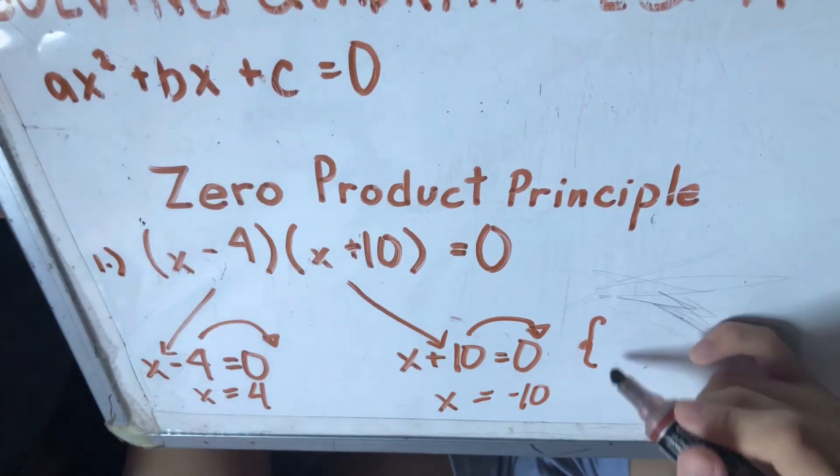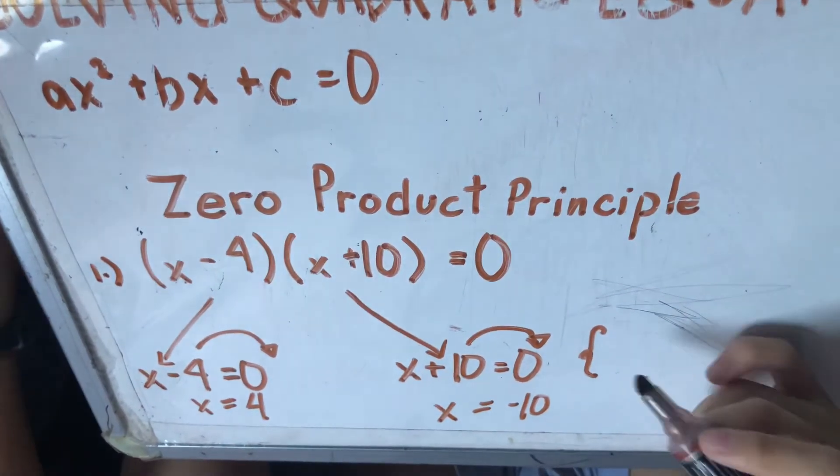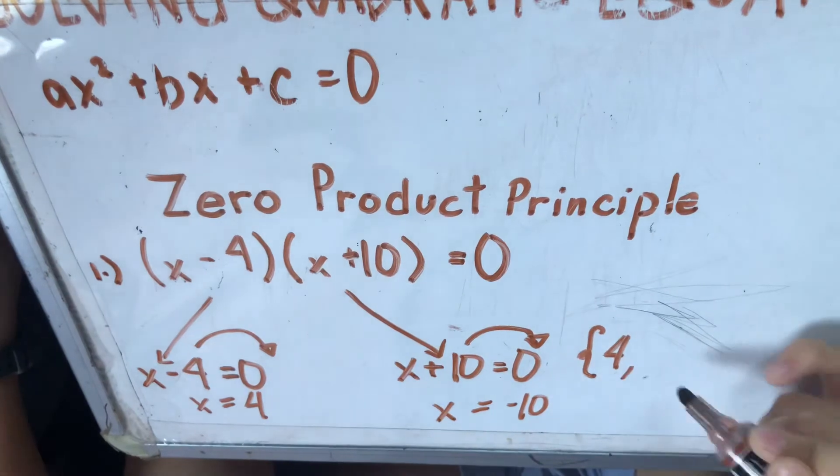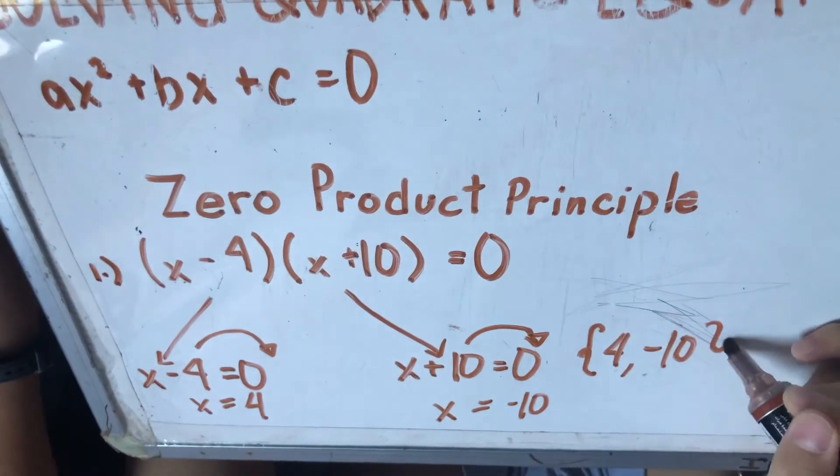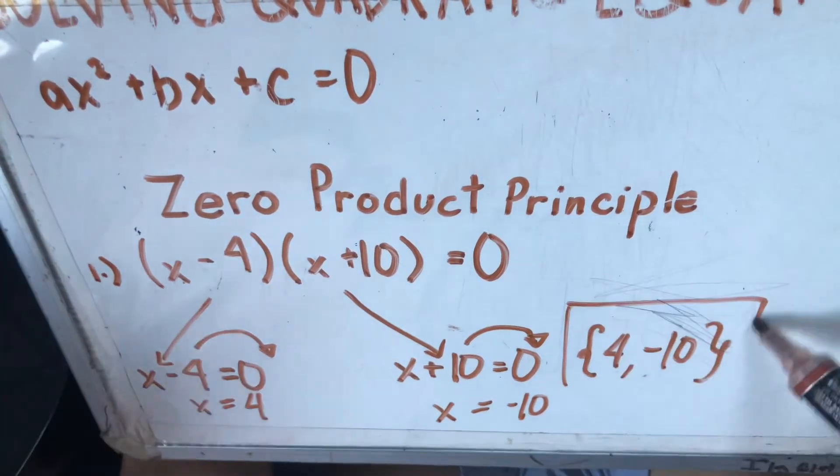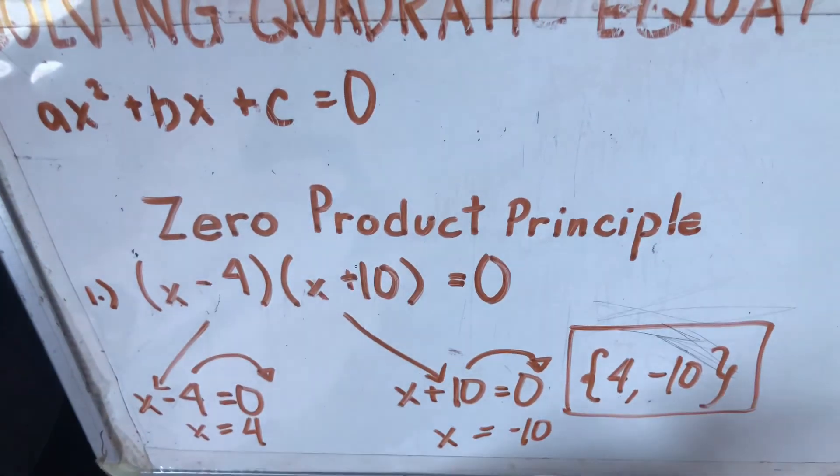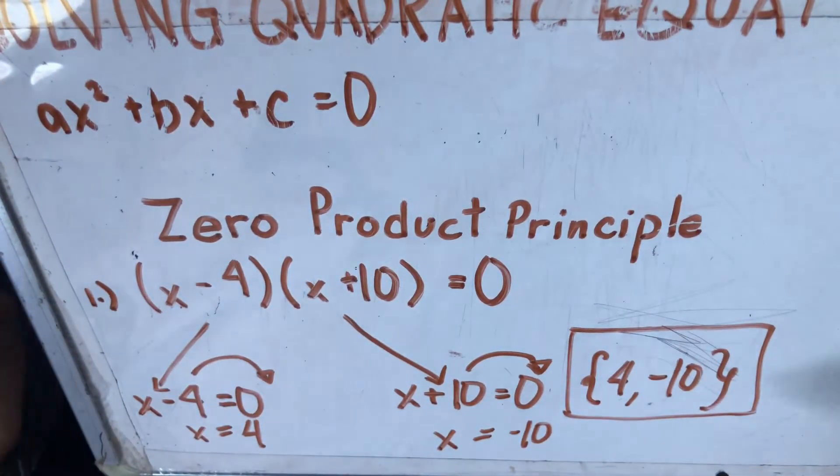Then isasurot natin siya sa solution set. So, 4 at saka negative 10. Napaka-simple, napaka-dali, maglilipat ka lang. So ito na ang sagot natin.